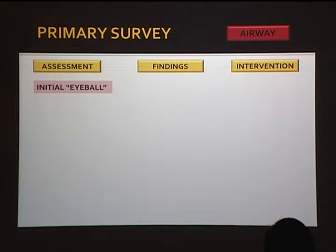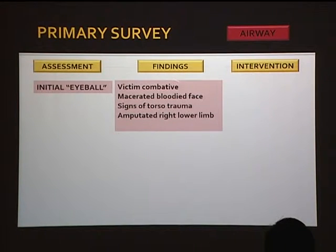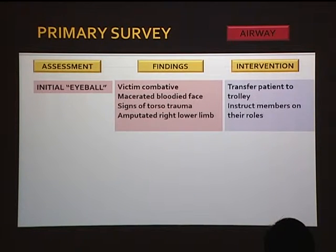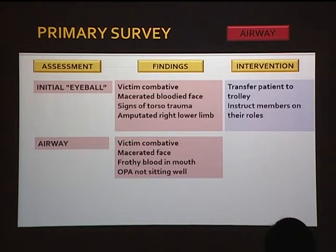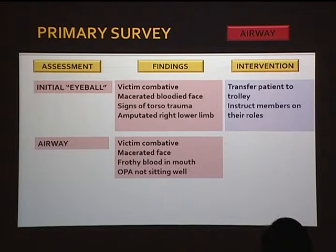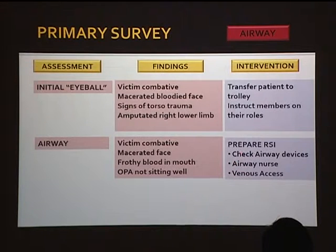Your assessment starts with airway — eyeball the patient and see what you find. He's fighting with you. When a victim is combative, suspect hypoxia. His whole face is bloodied, with signs of torso trauma. The chest and abdomen look injured with an amputated right lower limb. You transfer the patient to a trolley. You feel this person needs their airway secured quickly because they may develop airway obstruction very rapidly. There's blood coming from the mouth, and an oral airway is stuck in a semi-conscious patient, so it has to be taken out. Prepare for RSI to secure the airway.